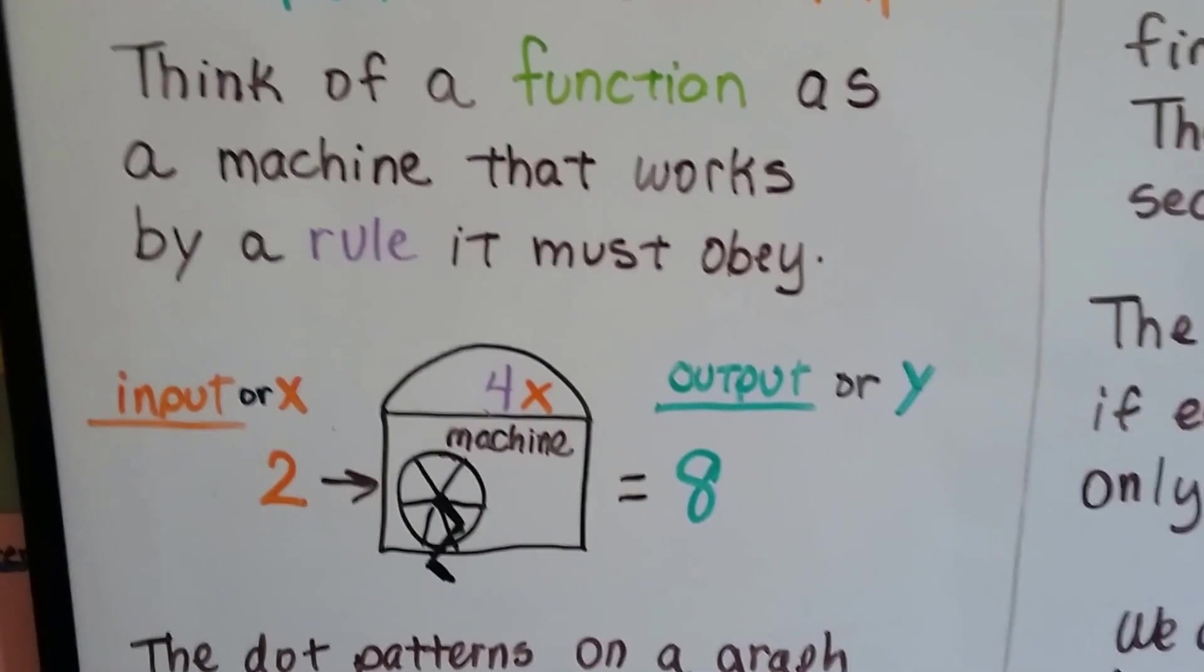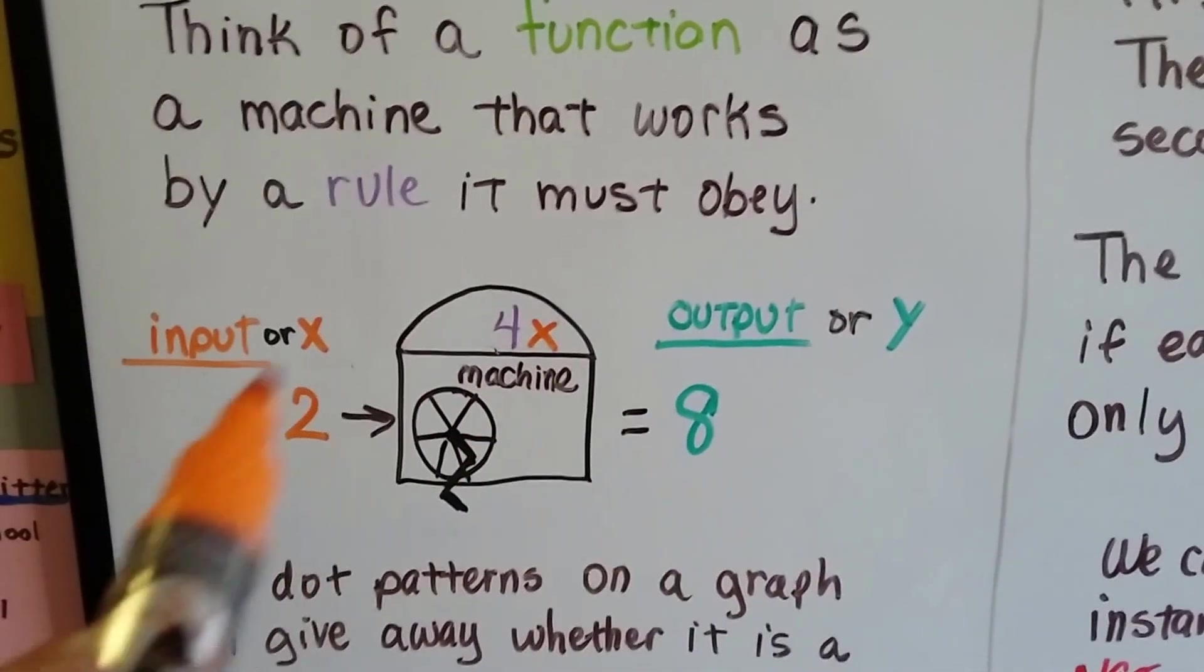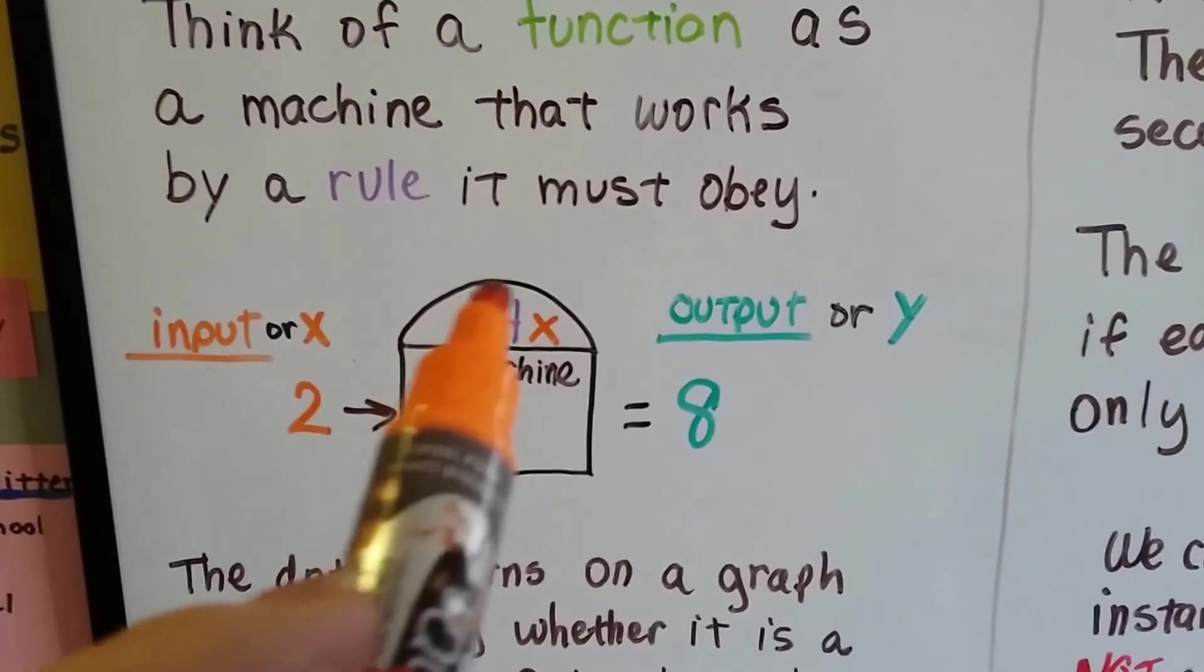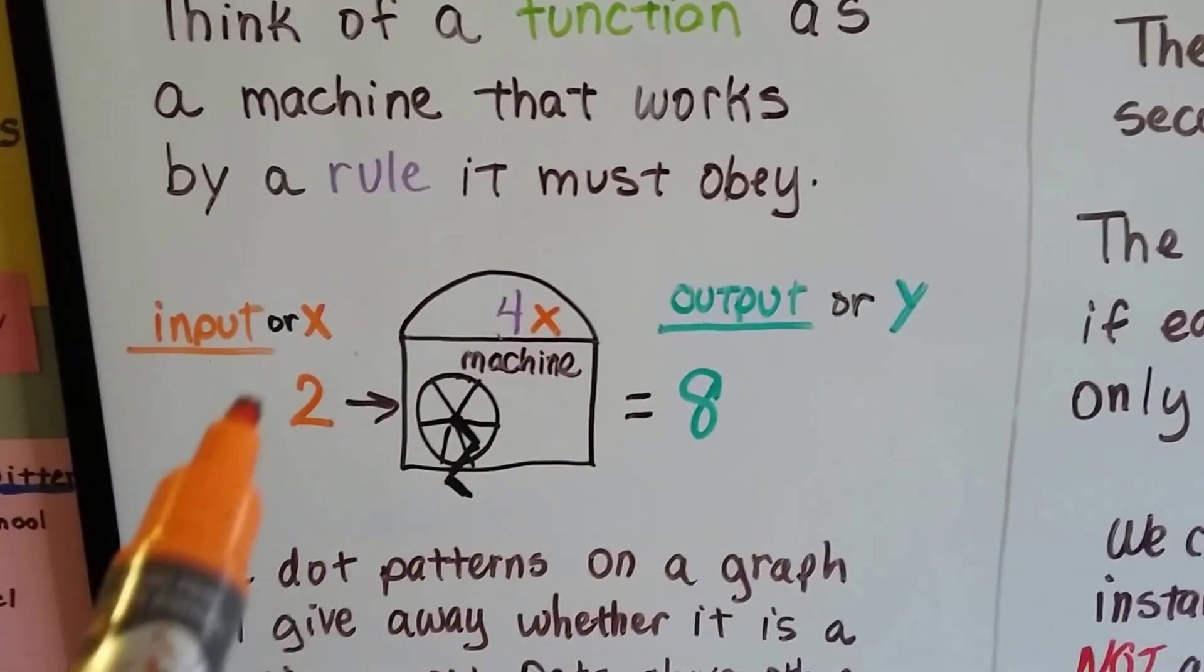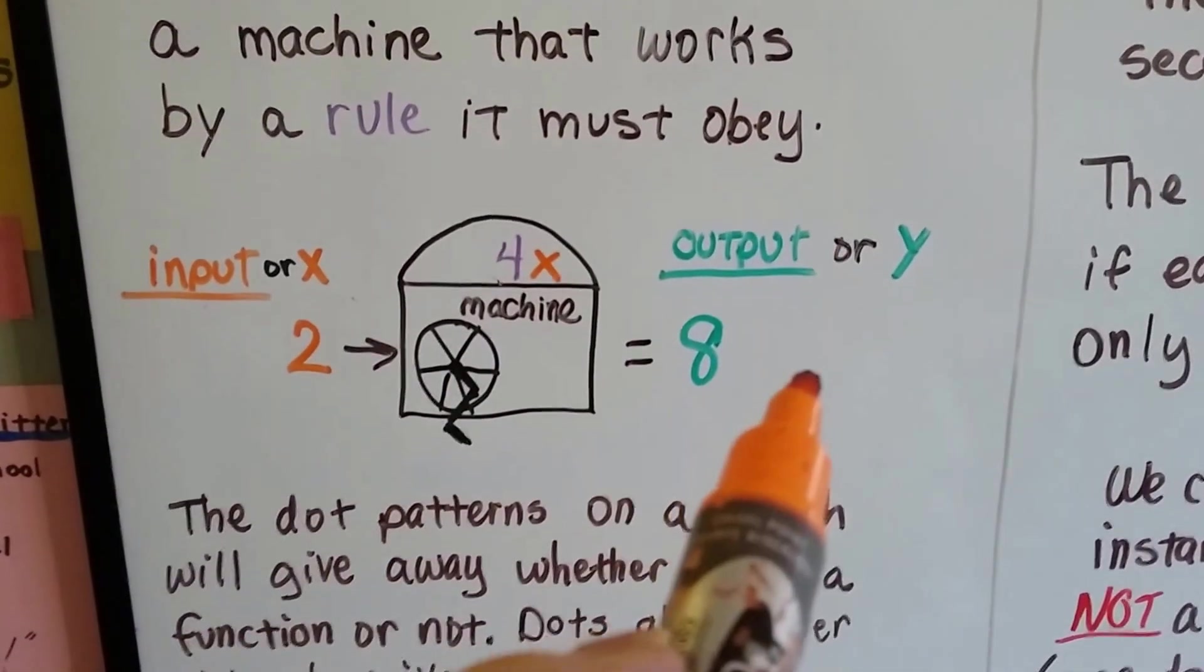And on our little function machine here, there's a rule. This one's 4x. And that's how these two are related. It's by that 4x. 2 times 4 is 8. 2 is the input, 8 is the output. For each input, there's one output.